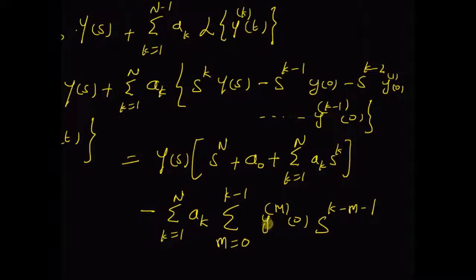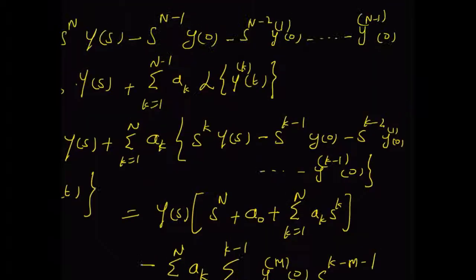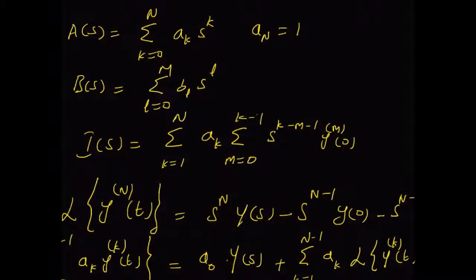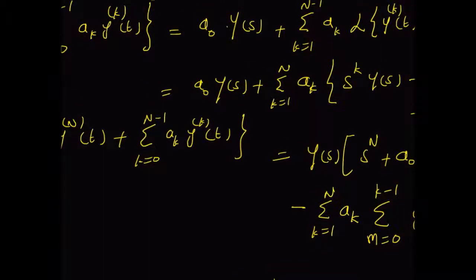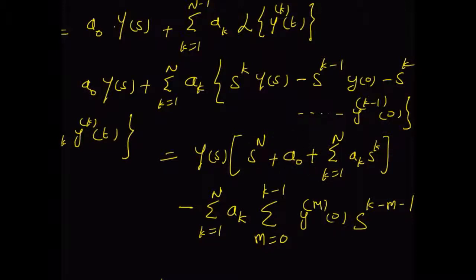This summation represents all the initial values of the output y(t) and its derivatives. Now we can rewrite this sum as Y(s) multiplied by a polynomial, which can clearly be seen as A(s). Here we can clearly see that the polynomial A(s) is equal to the sum k equal to 0 to n, a_k s^k, and by comparing with the coefficient of Y(s), the summation from k equal to 0 to n where a_n equals 1 is clearly equal to the polynomial A(s).